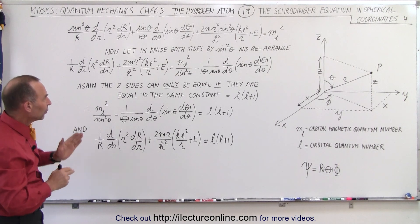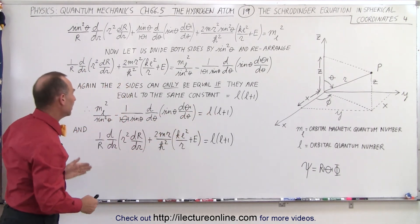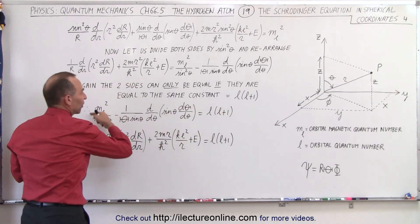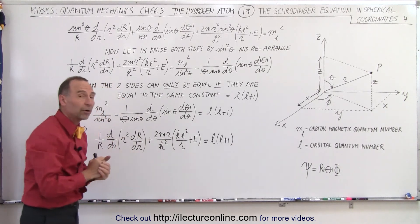But once we've done that, we set each of the sides equal to L times L plus 1, and now we have a second differential equation which only has a variable theta in it, and a third differential equation which only has a variable r in it.